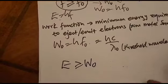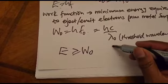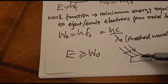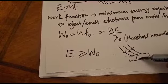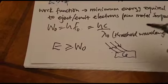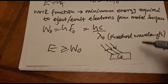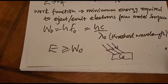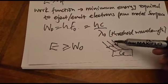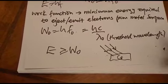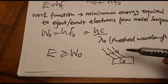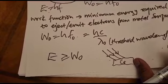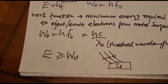If a light is shown onto a metal and there is no electron ejected, it means the energy of a photon of that radiation is less than the work function — hence no electron is ejected. Also, if the photon energy is equal to the work function, electrons will be ejected but they won't be able to move, because there is no remaining energy to give those electrons motion.